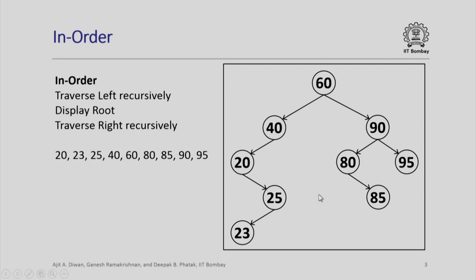You would have guessed by now what would be the post-order traversal. Here we traverse the left recursively, then right recursively, and then we display the root. So this will be the order in which the data will be printed out if we do a post-order traversal.